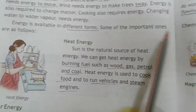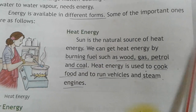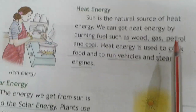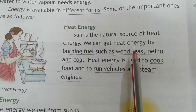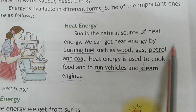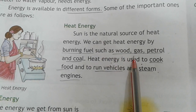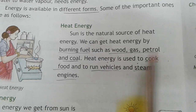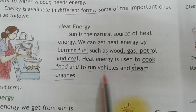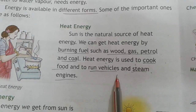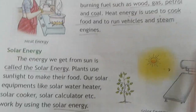Some of the important ones are as follows. Heat energy: the sun is the natural source of heat energy. We can get heat energy by burning fuel such as food, gas, petrol, and coal. Heat energy is used to cook food and to run vehicles and steam engines.